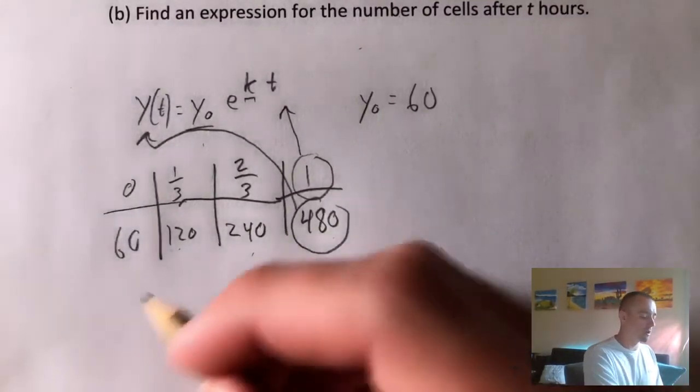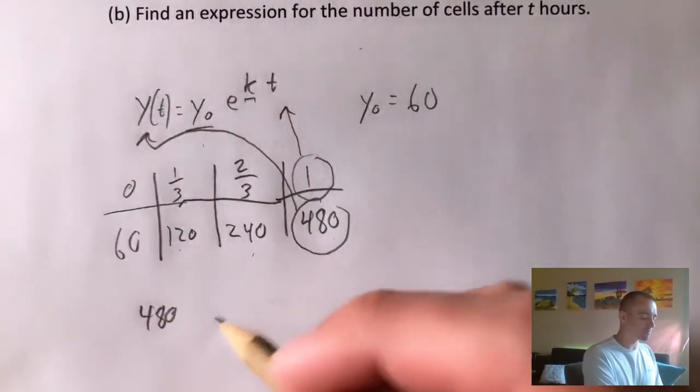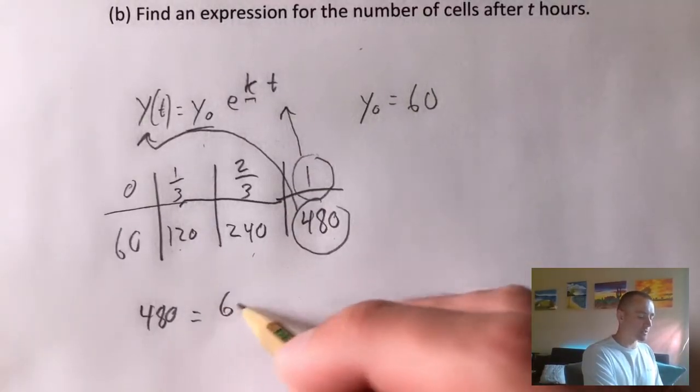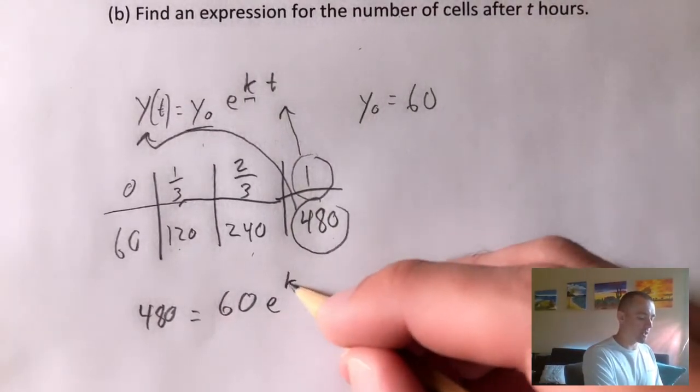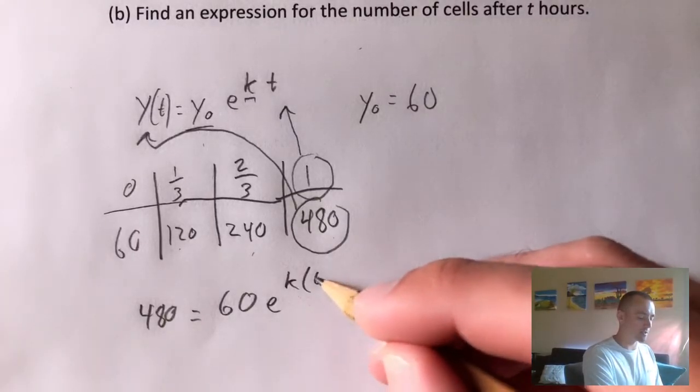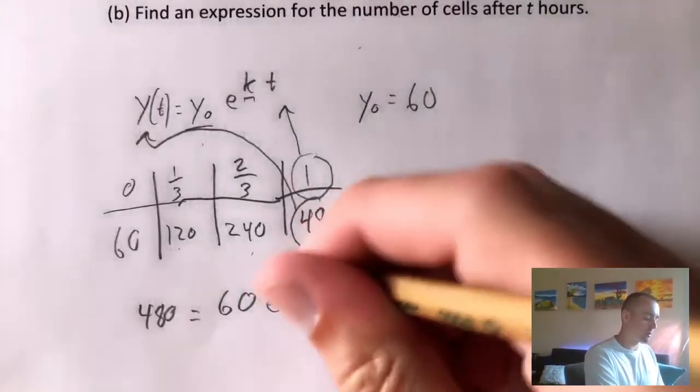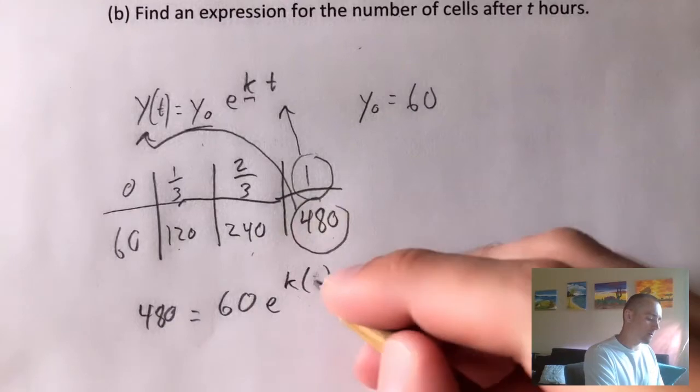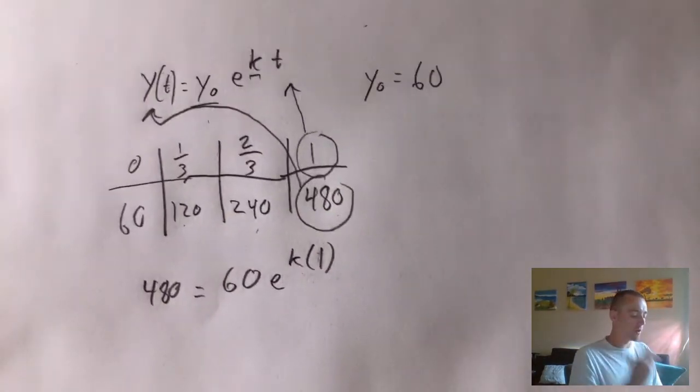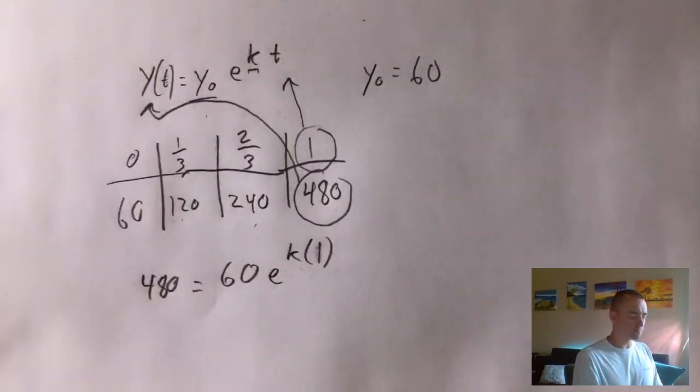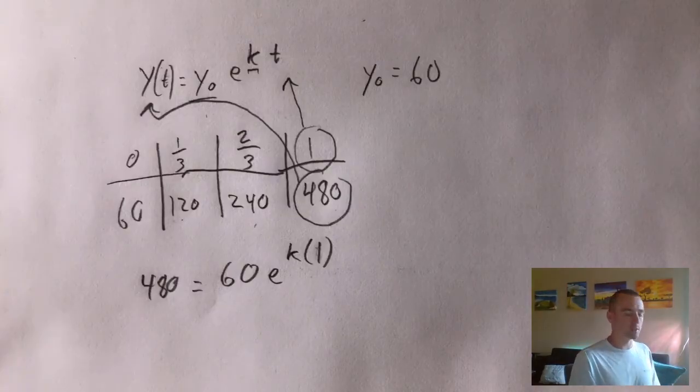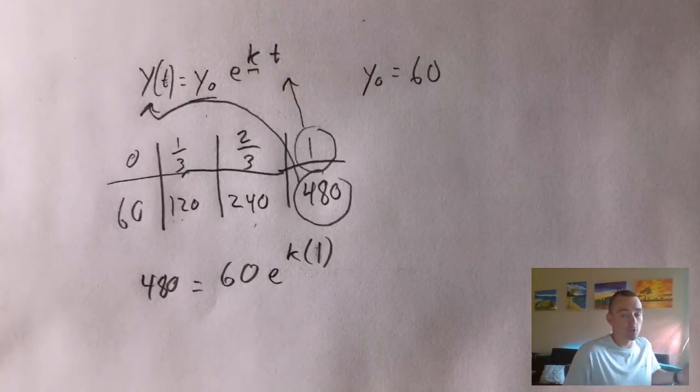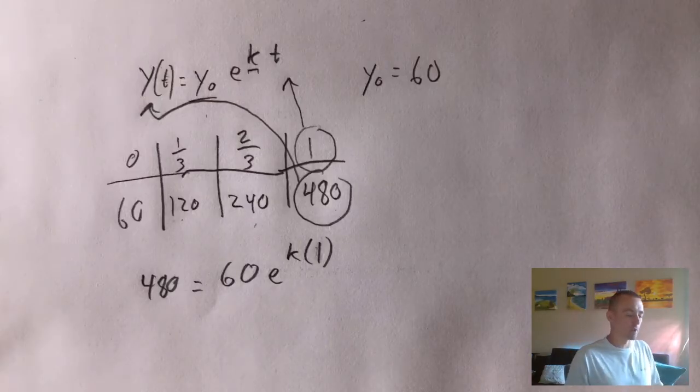we would get 480 equals 60 times e to the k times t. And t is again, 1. So now we have this formula, or this function. And we've basically plugged in all the pieces except for one piece, which is k, which like I said, is the thing we're trying to solve for. So obviously, we don't know that to plug it in. So now all we have to do is solve this equation for k.